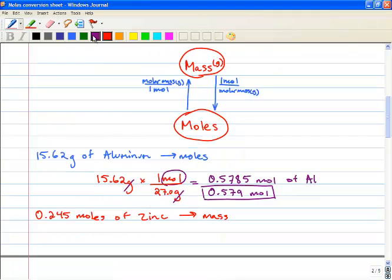So what we're going to do is we're going to get 0.245 moles, and whatever we want goes on top. We want grams, and we have one mole, and we have 65.4 grams per mole of zinc.